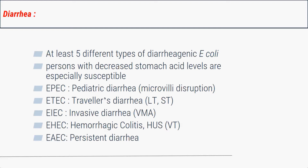Diarrhea-causing E. coli can be divided into five types: EPEC, ETEC, EIEC, EHEC, and EAEC. EPEC stands for enteropathogenic E. coli and causes pediatric diarrhea by attaching to the microvilli of the intestine, disrupting or destroying them — lesions known as attaching and effacing lesions.